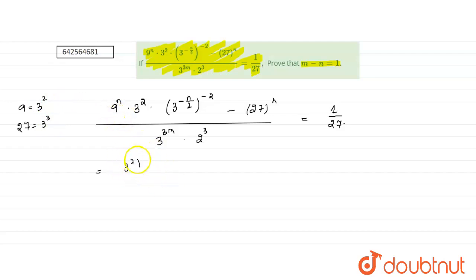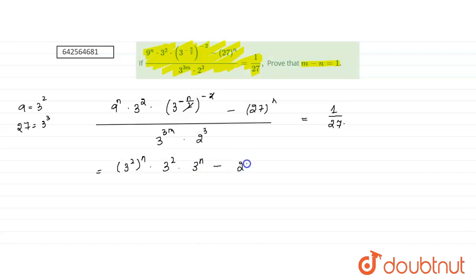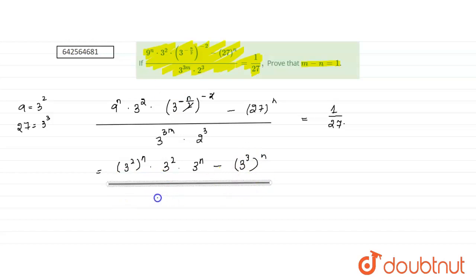9 becomes 3 squared whole power n, into 3 squared. The two negatives cancel, so minus minus becomes plus, and it becomes 3 to the power n. Then 27 is written as 3 cubed whole power n, divided by the denominator 3 to the power 3m into 2 cubed.